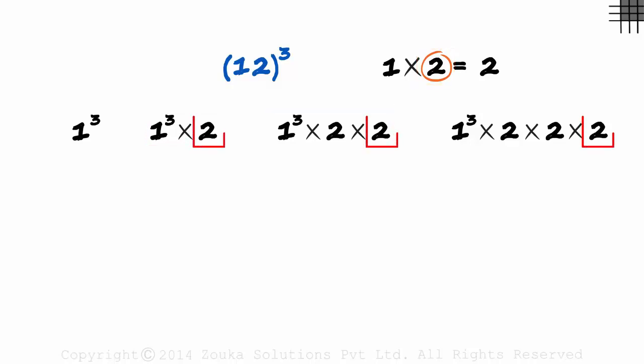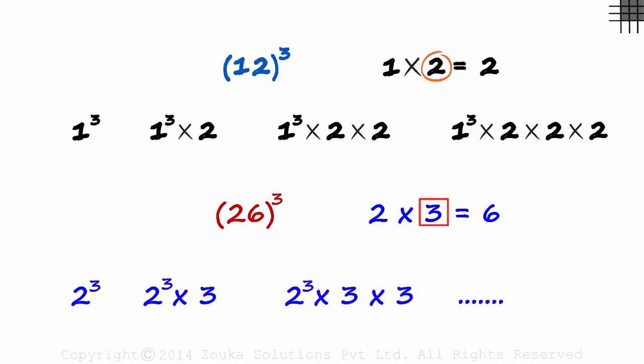Don't forget, this 2 that we are multiplying the numbers with is this 2 and not the units digit. For example, if we had to cube 26, we would have 2 times 3 equals 6. The cube of the tens digit could be 2³, and then we multiply with 3 and then multiply again with 3 and so on. So not 6.